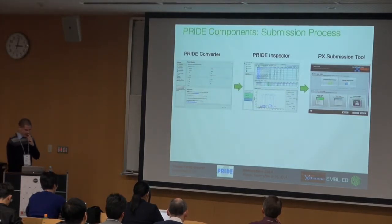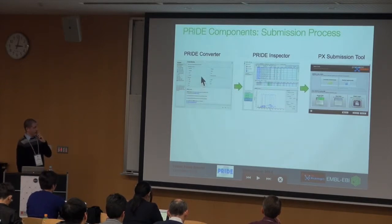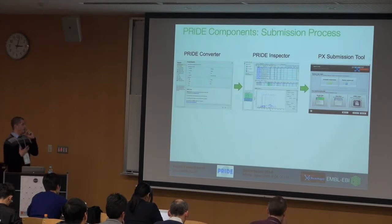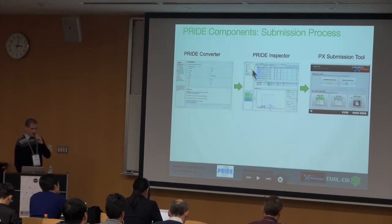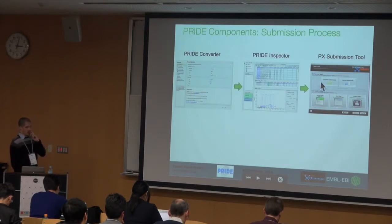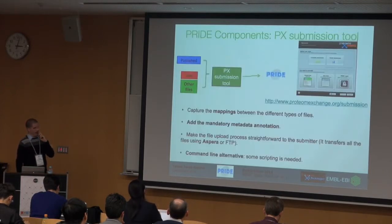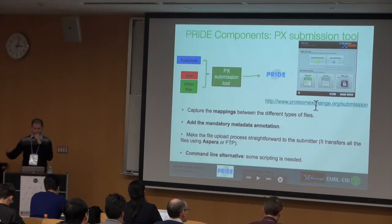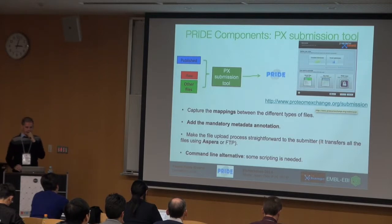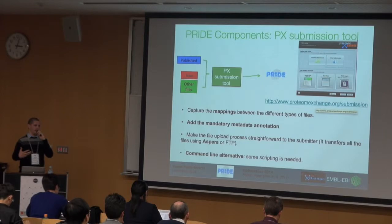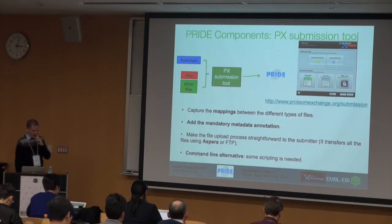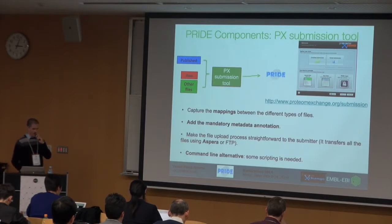The submission process is based on three tools. One is the PRIDE Converter — if the search engine giving you results does not support mzIdentML or a PSI standard, you convert it using PRIDE Converter. Then there is PRIDE Inspector, used to visualize results and assess quality measures of the experiment. And we have the PX Submission Tool, which submits the data. It captures the relations between the files the researcher provides, and it is mandatory to provide metadata related to each experiment such as publication and tissue. The upload is really fast thanks to ASPERA.